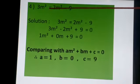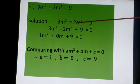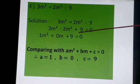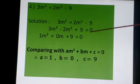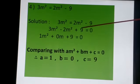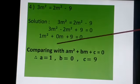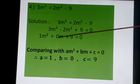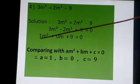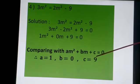3M² = 2M² - 9. Equation copy करेंगे. 2M² left में जाएगा: 3M² - 2M² - 9 = 0 wait, minus 9 right में है so plus 9 आएगा. 3M² - 2M² = 1M². Middle term नहीं है तो 0M लिखेंगे. So: M² + 0M + 9 = 0. Compare: A = 1, B = 0, C = 9.